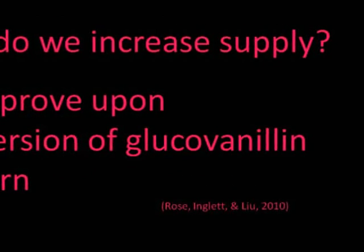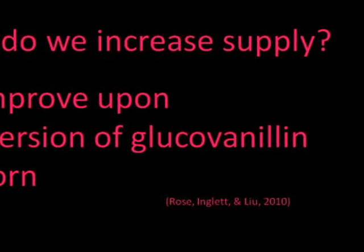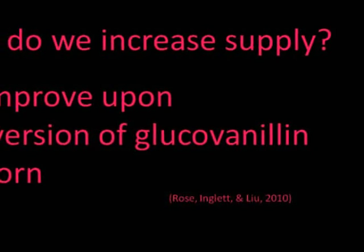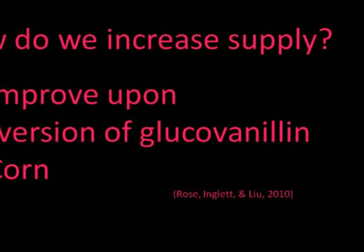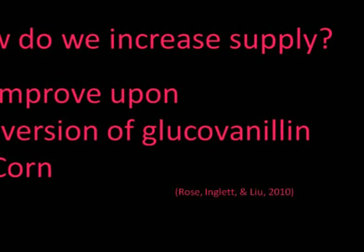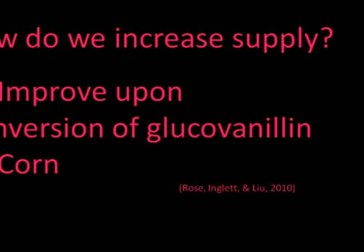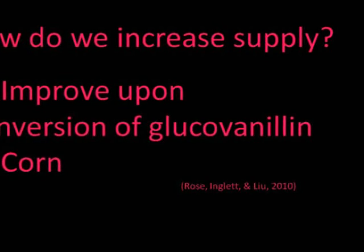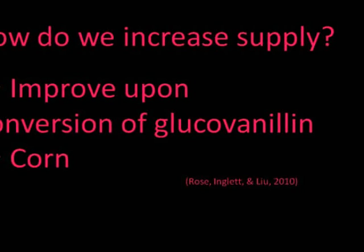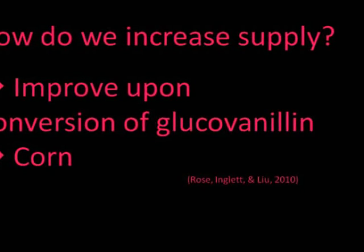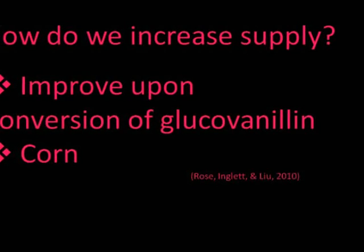There is an opportunity to increase the supply of vanillin. Vanillin is produced from the process of hydrolysis of glucovanillin. Generally during this process, only 2% of the vanillin is yielded. However, before carrying out this process, we can add exogenous cellulose, pectinase, and beta-glucosidase. This addition will allow the yield to go from 2% to 7%.